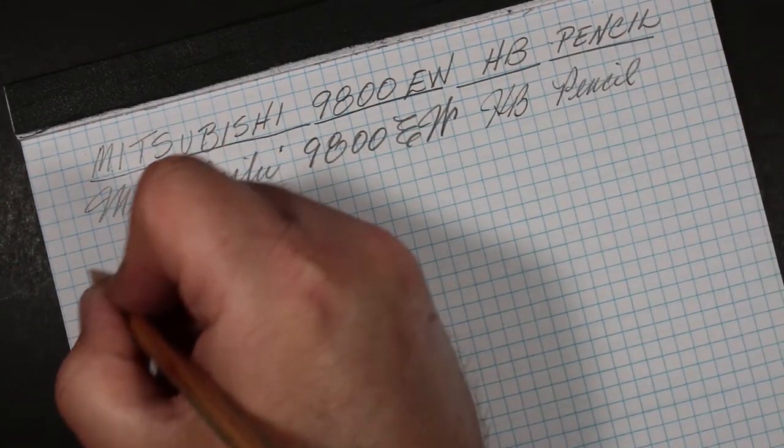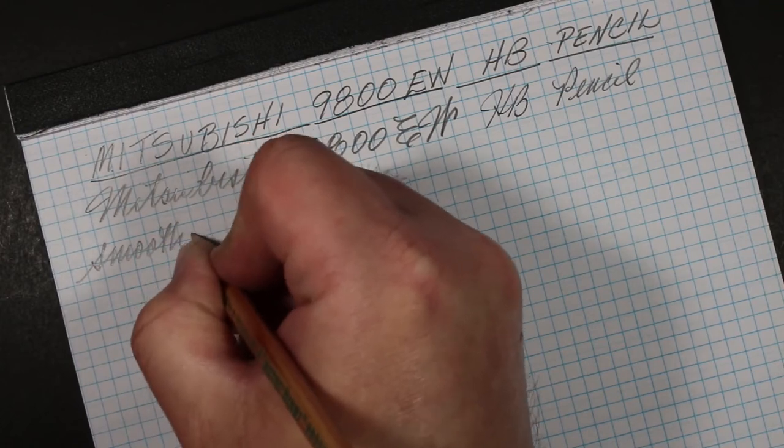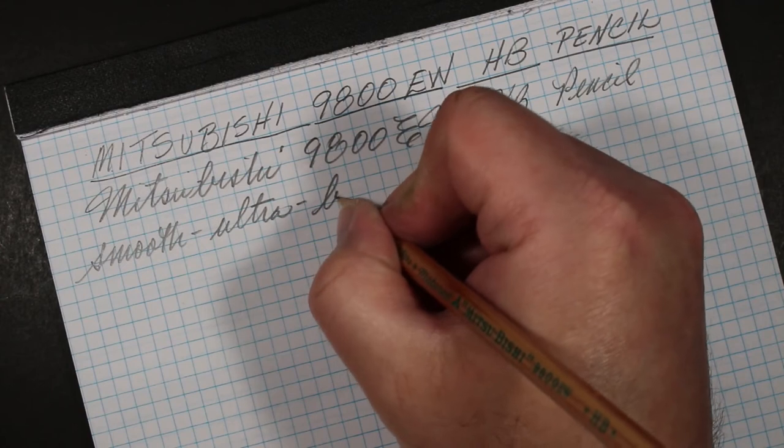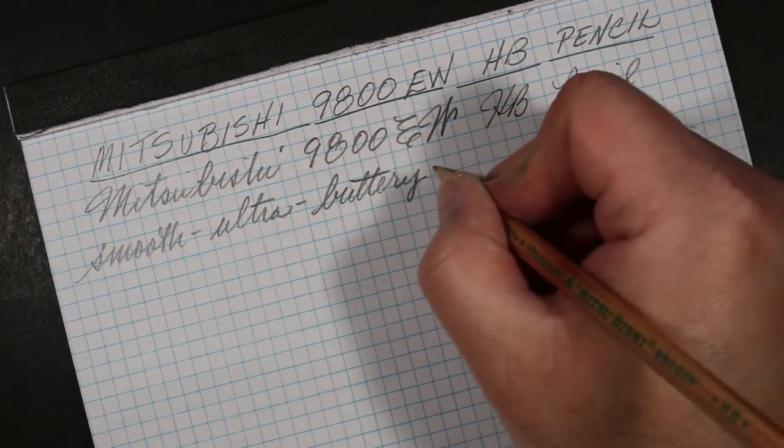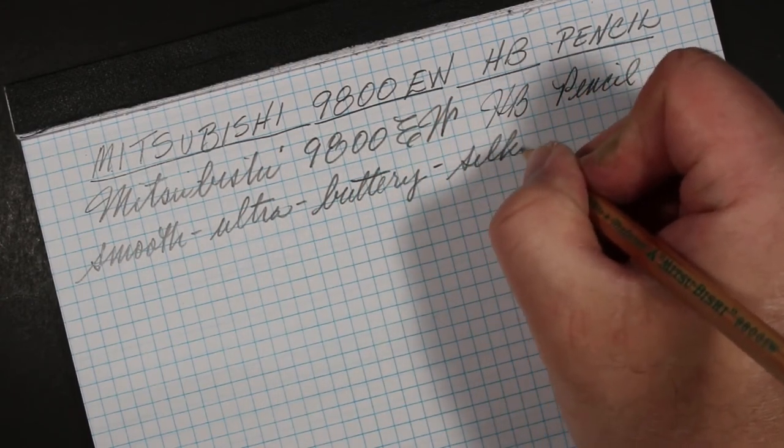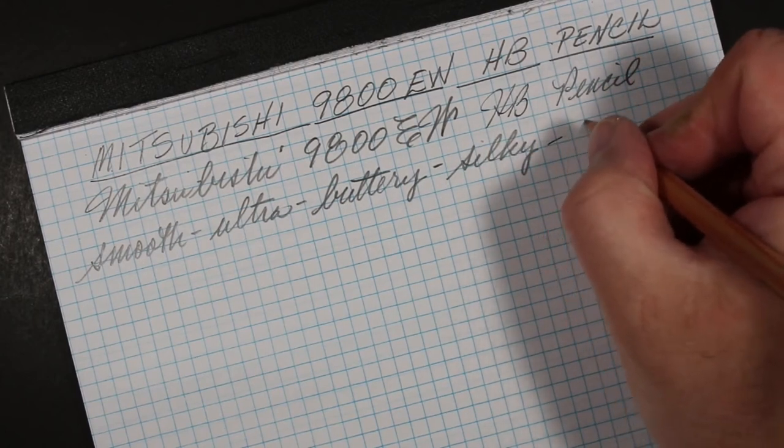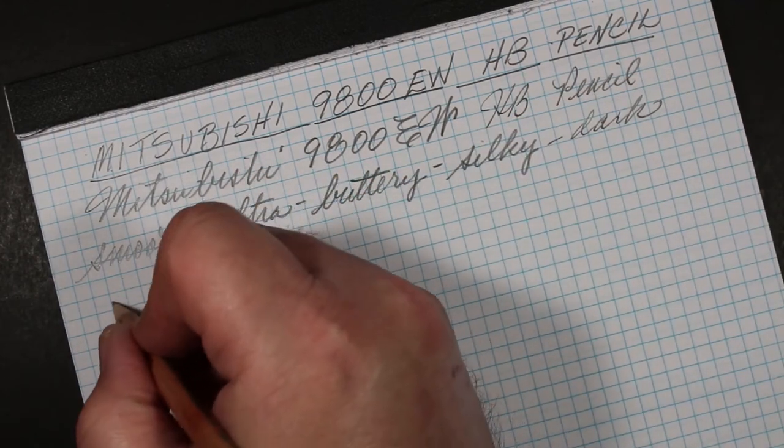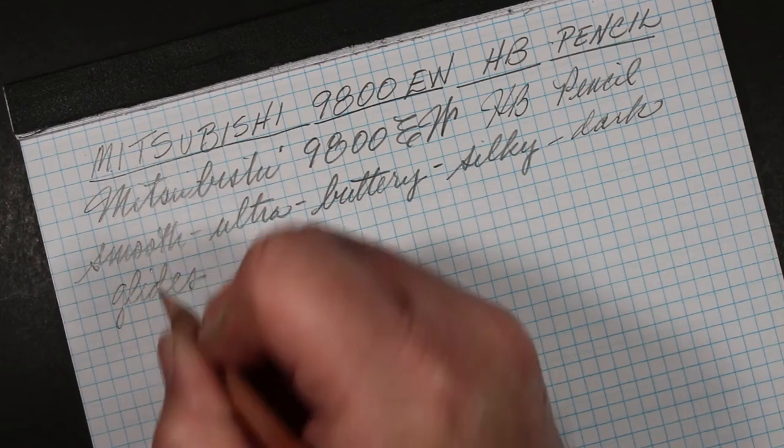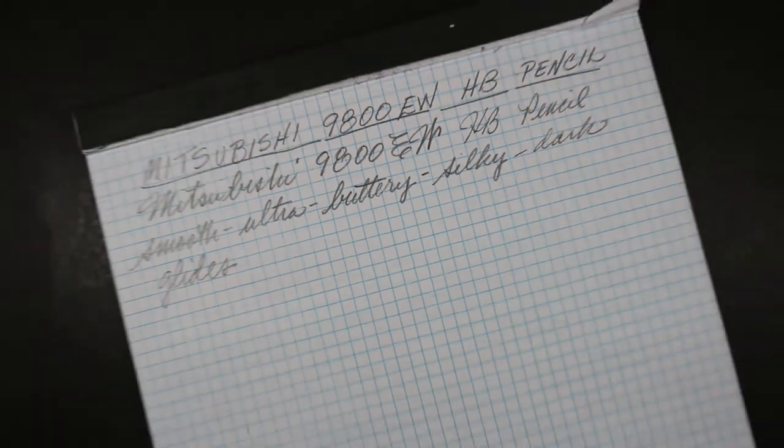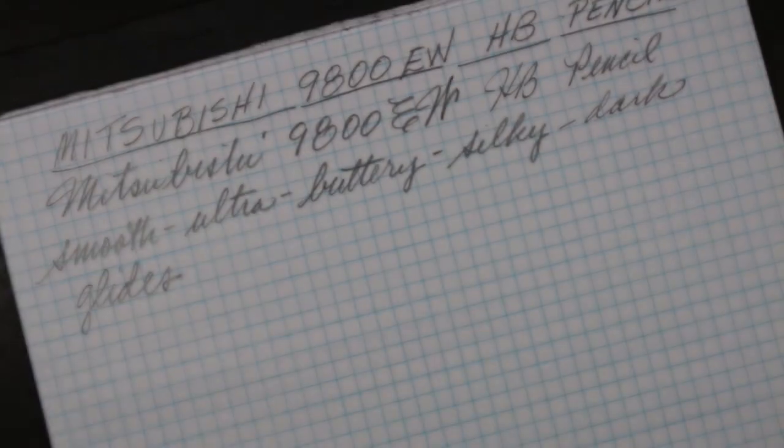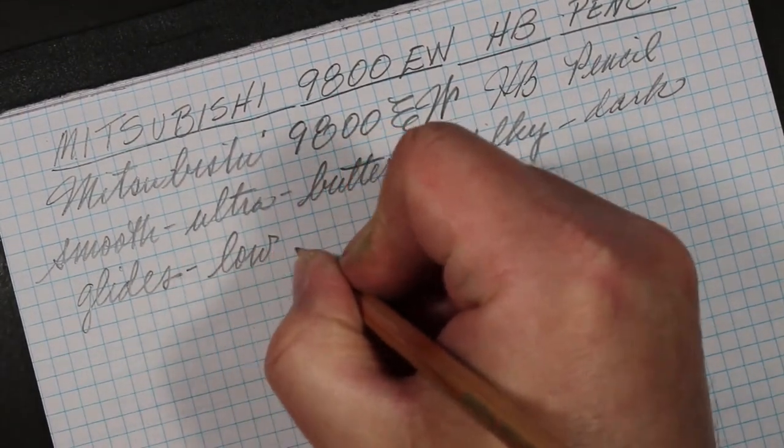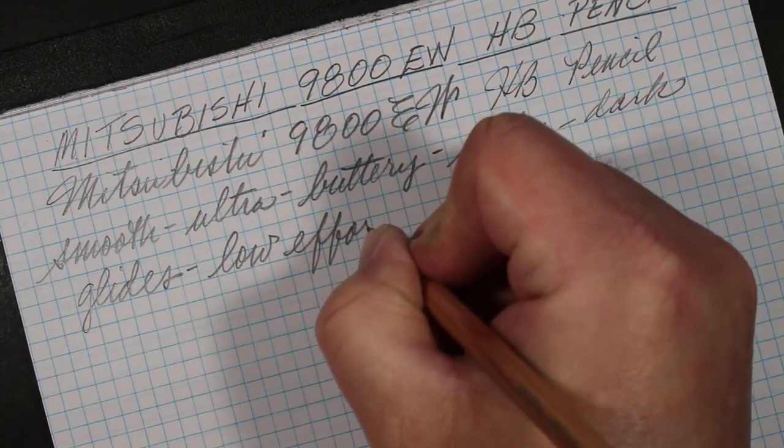Smooth. Ultra smooth, ultra smooth. Buttery. Silky. Dark. Glides. This is a low effort pencil.